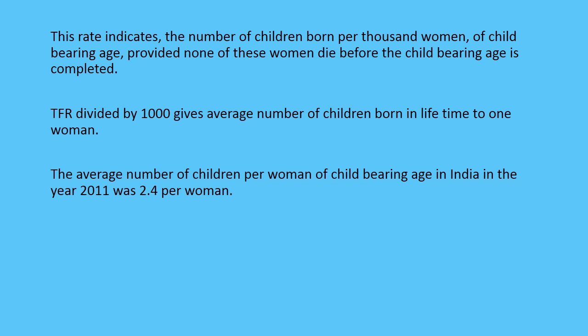TFR also indicates the number of children born per 1000 women of childbearing age, provided none of these women die before the childbearing age is completed. TFR divided by 1000 gives the average number of children born in a lifetime to one woman.